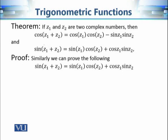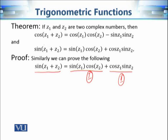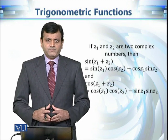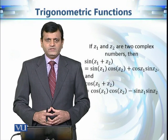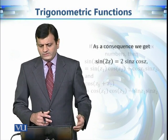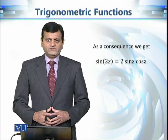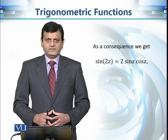Similarly, we can prove the sine addition formula by simplifying each term on the right-hand side and adding them, showing the result equals sin(z₁ + z₂), again using the exponential definitions. Once these identities are proved, their consequences follow. One important consequence is sin(2z) = 2sin(z)cos(z), which is exactly the same as in the real case.